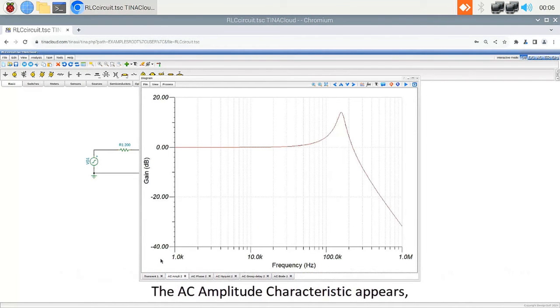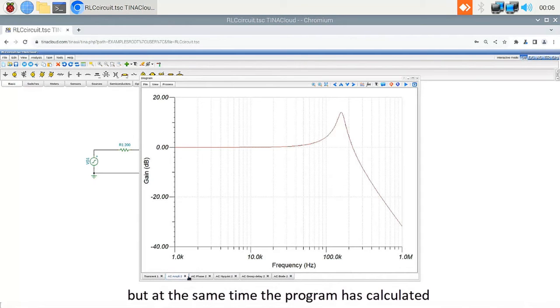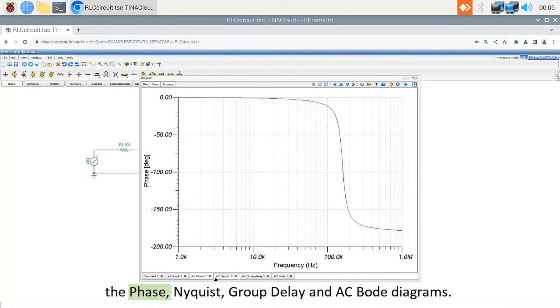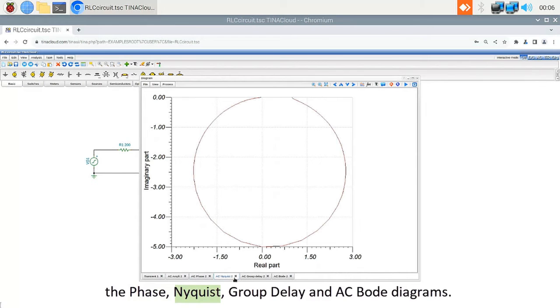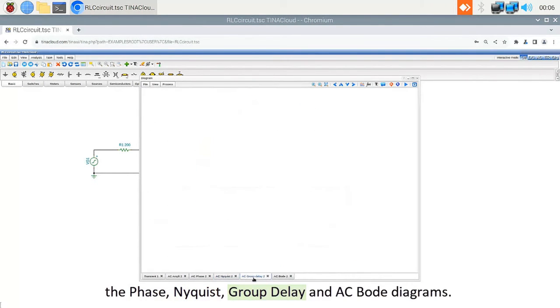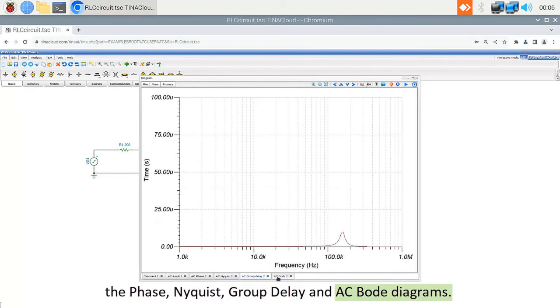The AC Amplitude characteristic appears, but at the same time the program has calculated the Phase, Nyquist, Group Delay, and AC Bode Diagrams.